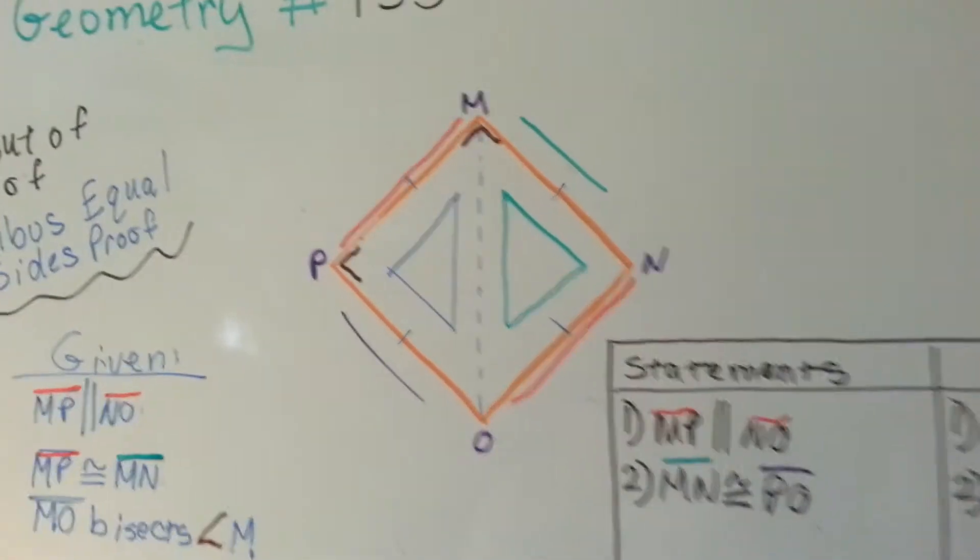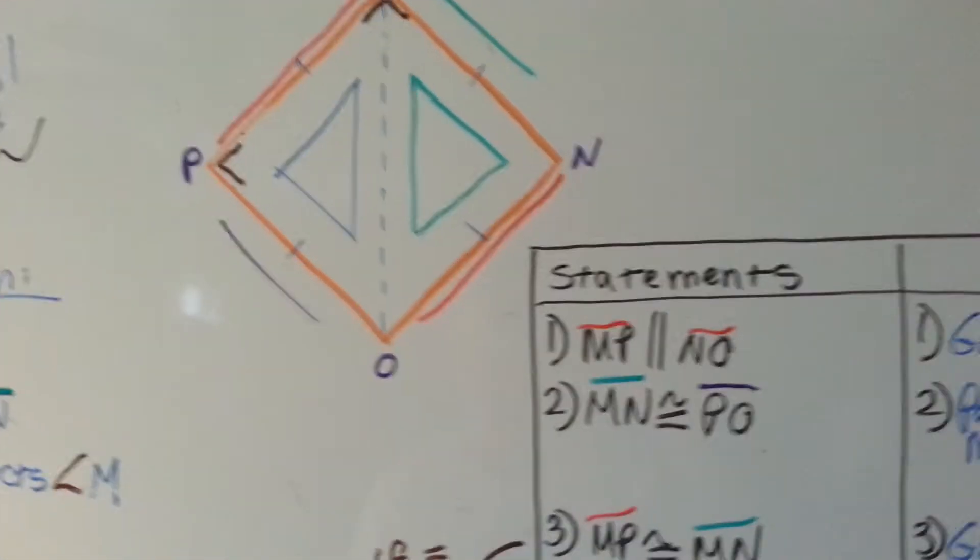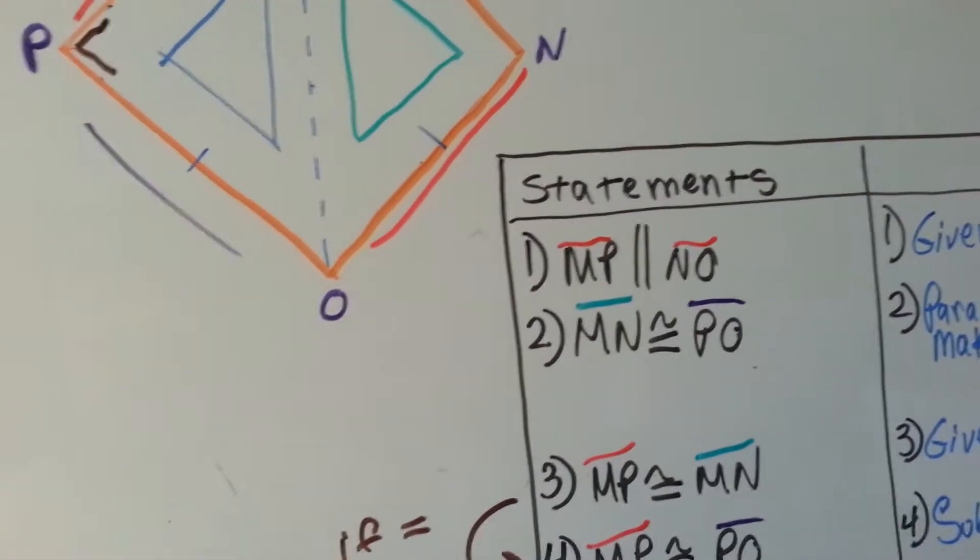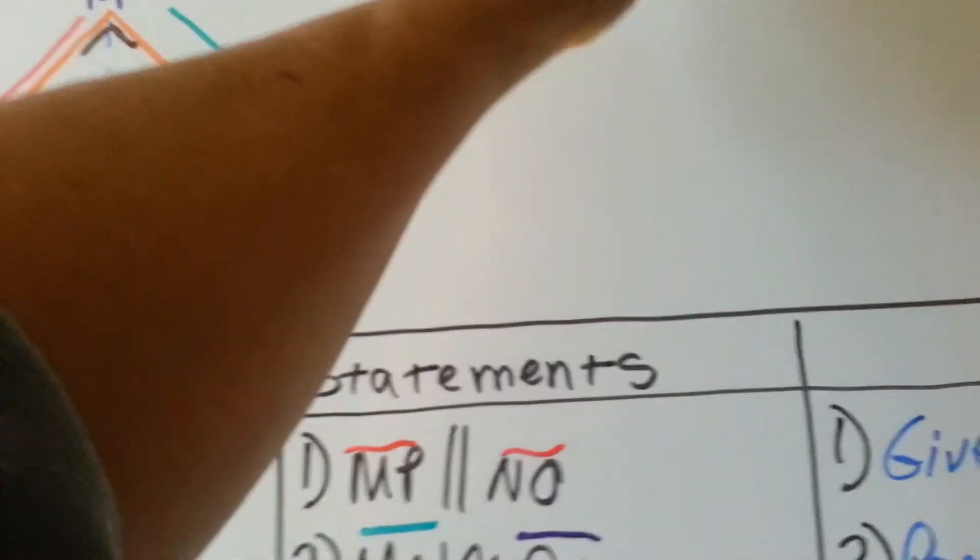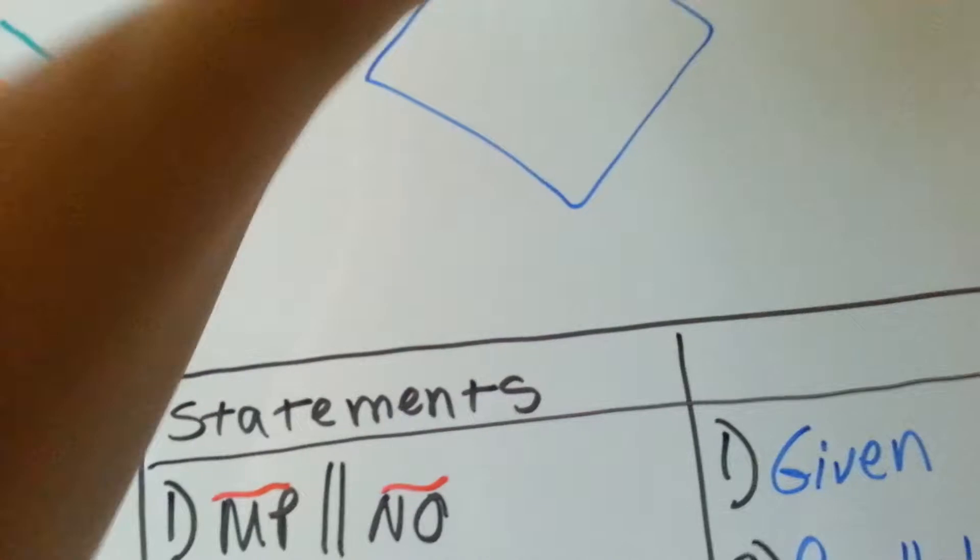So why is this triangle drawn up like this? Well, when it first started out, this triangle originally, this rhombus I'm sorry, was originally just like this.